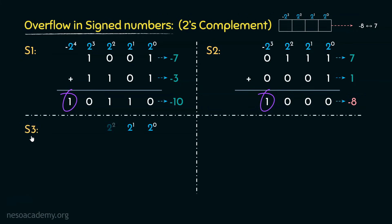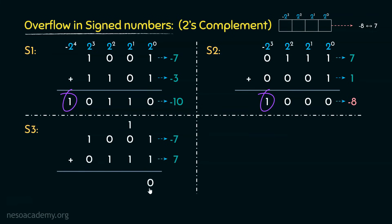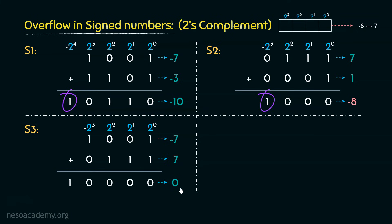Scenario 3: the pattern 1 0 0 1 is negative 7, and 0 1 1 1 is positive 7. Performing the addition: 1+1 gives 0 carry 1; 0+1+1 gives 0 carry 1; 0+1+1 gives 0 carry 1; 1+0+1 gives 1 0. For this 4-bit result, we get 0 — which is correct since negative 7 plus positive 7 equals 0 — so this carry should be discarded. Although carry was encountered, it actually means nothing here.